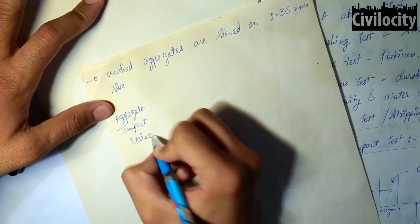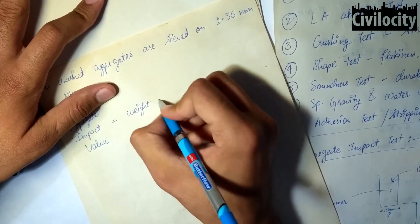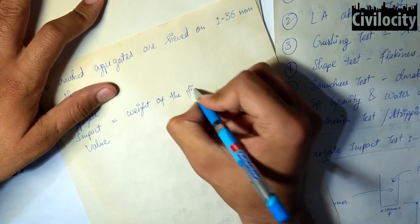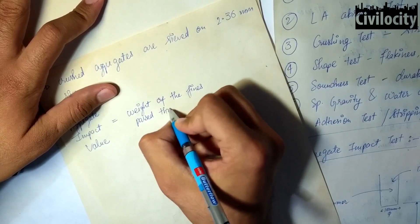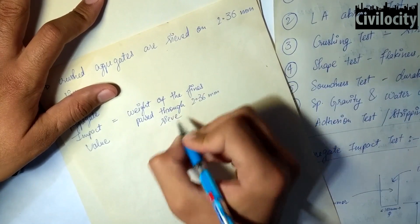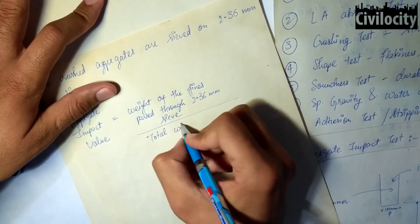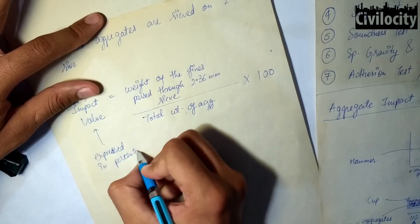If the test is repeated on two or more specimens then the mean value is considered to be the aggregate impact value. This test has been standardized by Bureau of Indian Standards so the aggregate impact value is defined as the weight of the fines passed through the 2.36 mm sieve divided by total weight of the aggregates times 100 and this value is expressed as percentage.